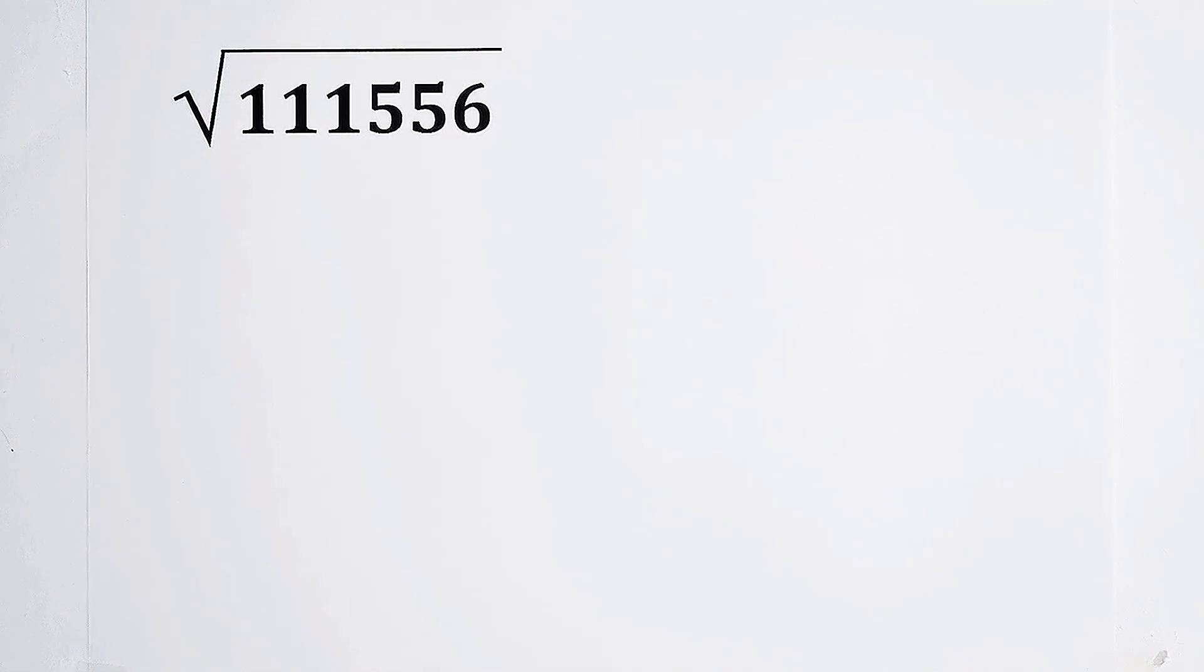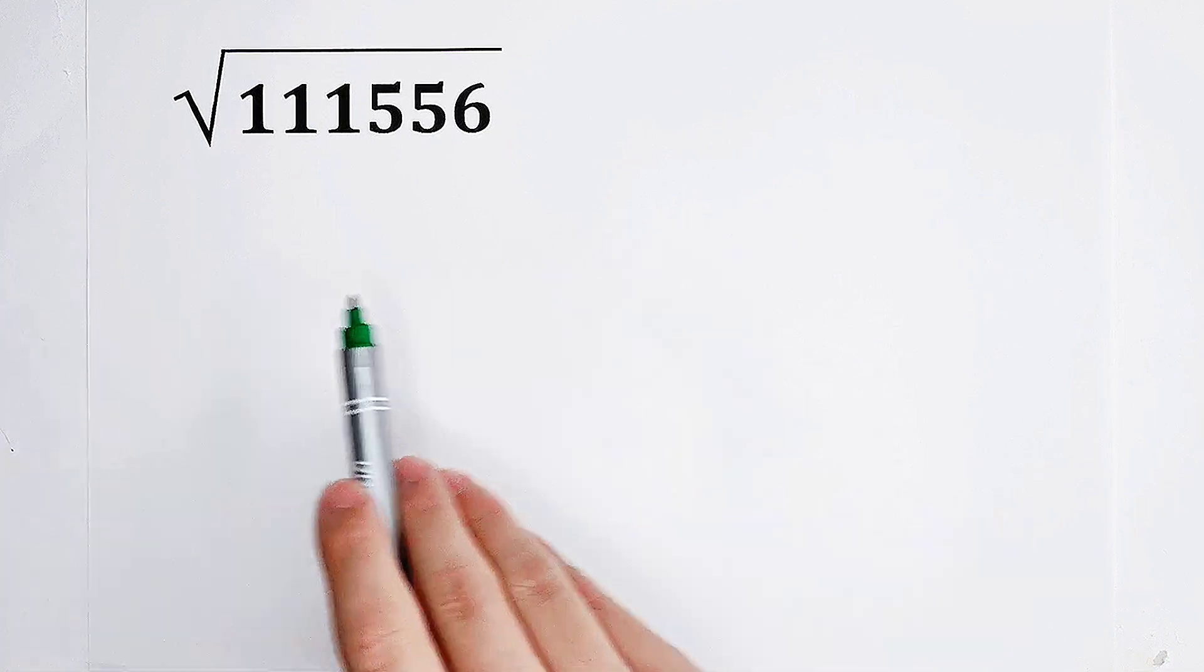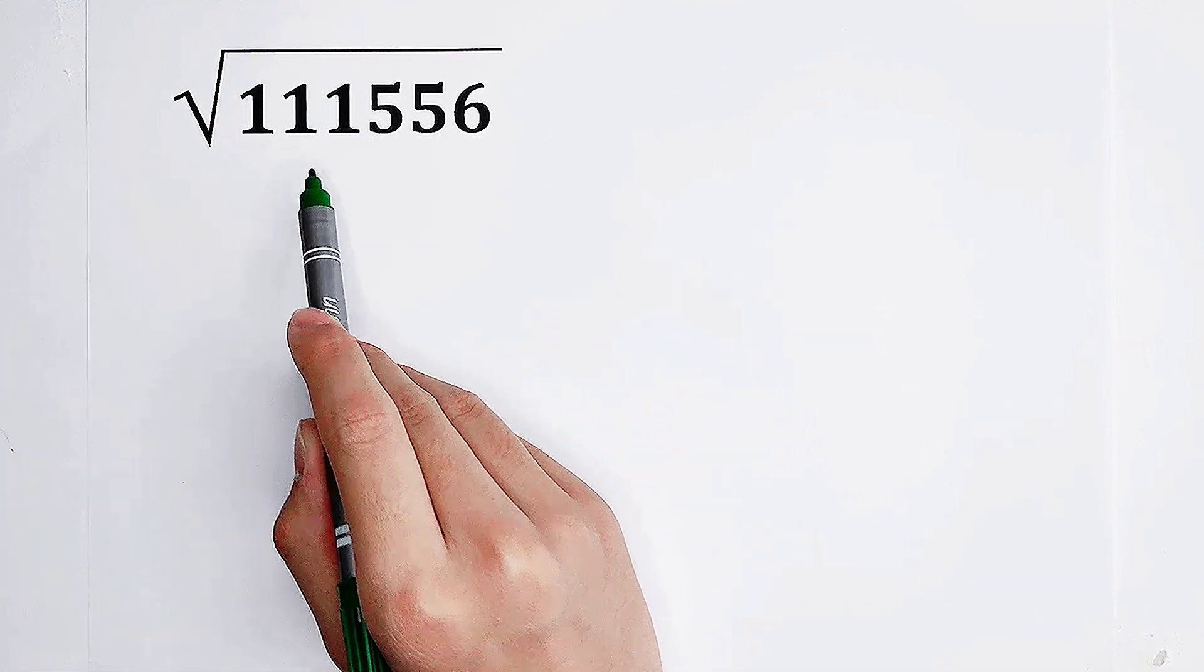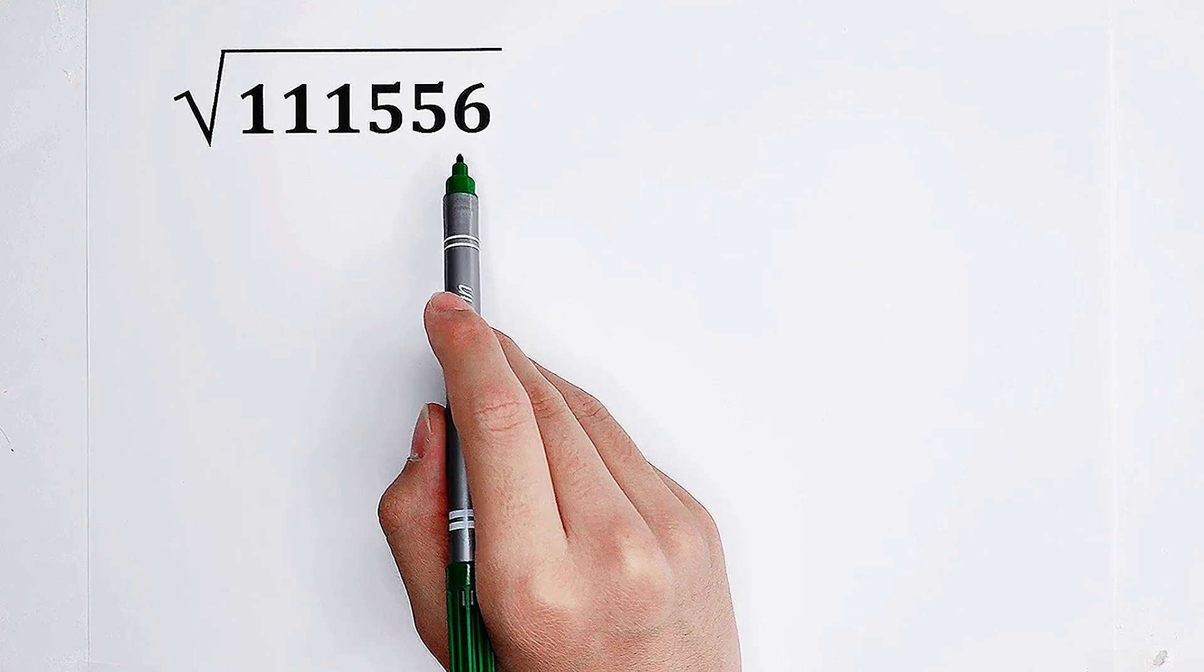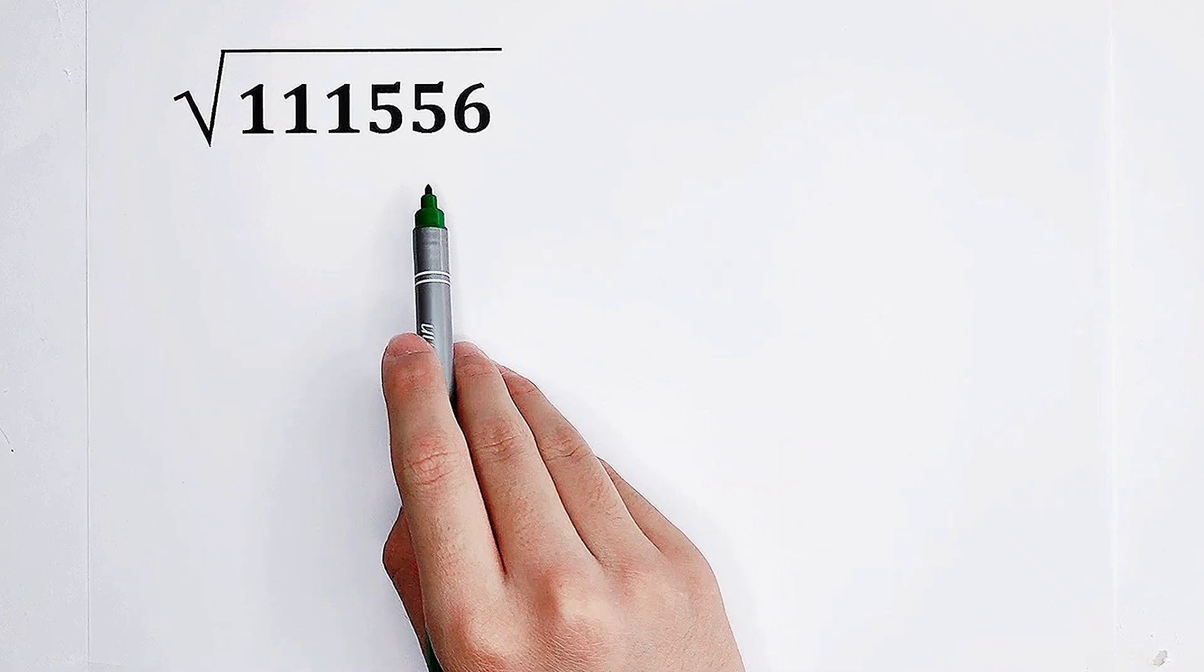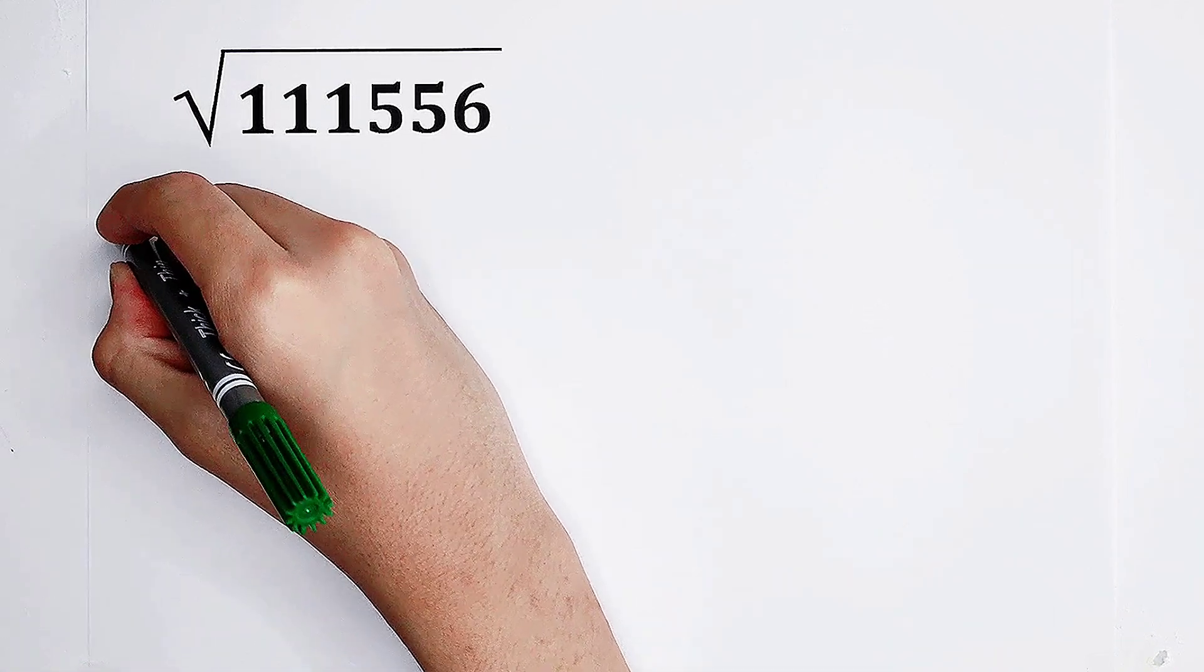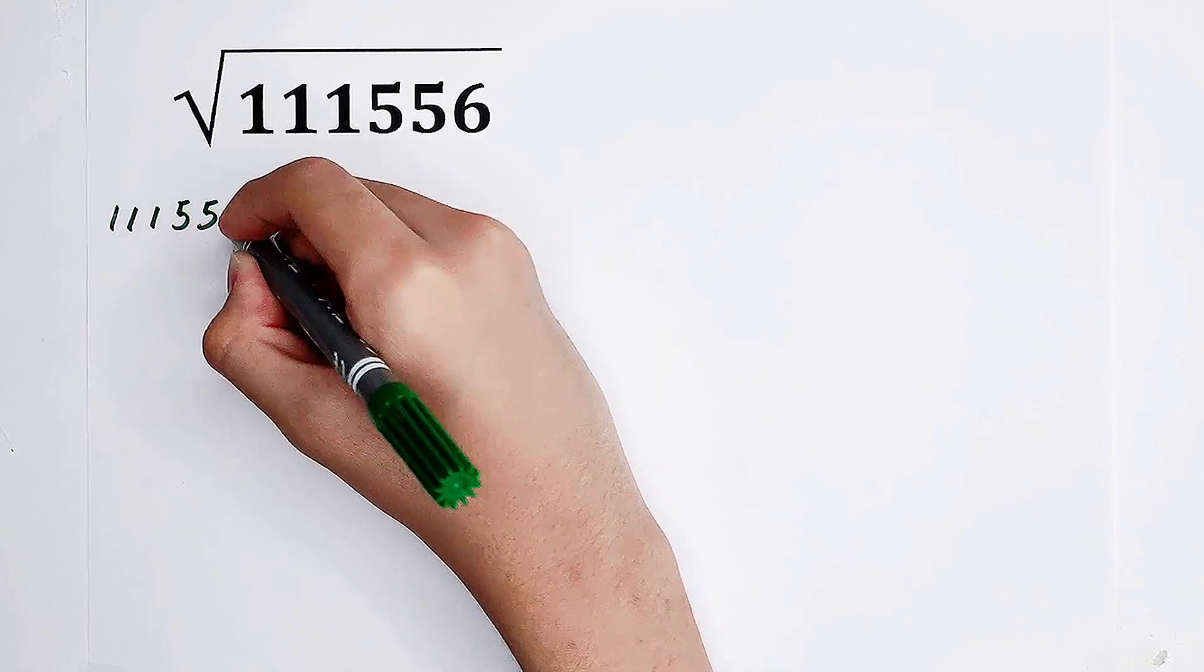I always tell you that everything begins with inspection. Look, the number under the square root: 111556.